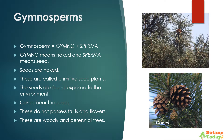Gymnosperms are naked seed plants. The word gymnosperm is made from two Greek words: gymno, meaning naked, and sperma, meaning seed. These are called primitive seed plants. The seeds are found exposed to the environment; cones bear the seeds. These do not possess fruits and flowers. These are woody and perennial trees.